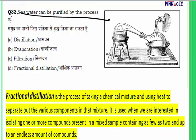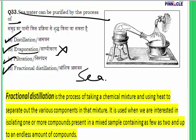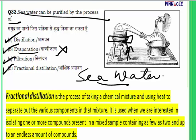Question 33: sea water can be purified by which process — distillation, evaporation, filtration, or fractional distillation? Sea water has a higher salt content. Evaporation is not the answer because in evaporation only the water evaporates, leaving nothing purified. Distillation is the correct process: water in a vessel is heated, vapor is collected and cooled in another container, and only pure water condenses — the salts are left behind.